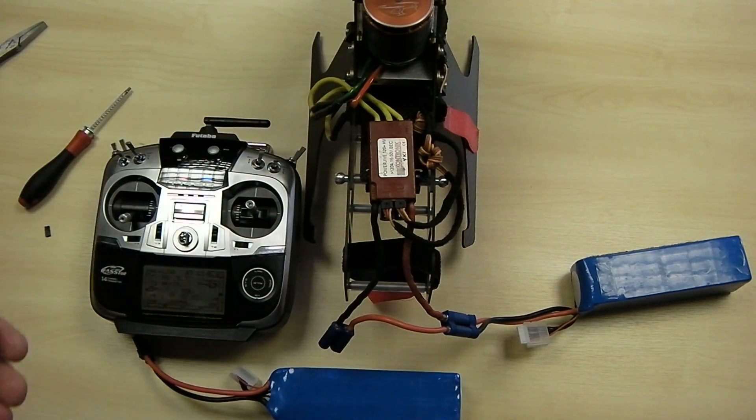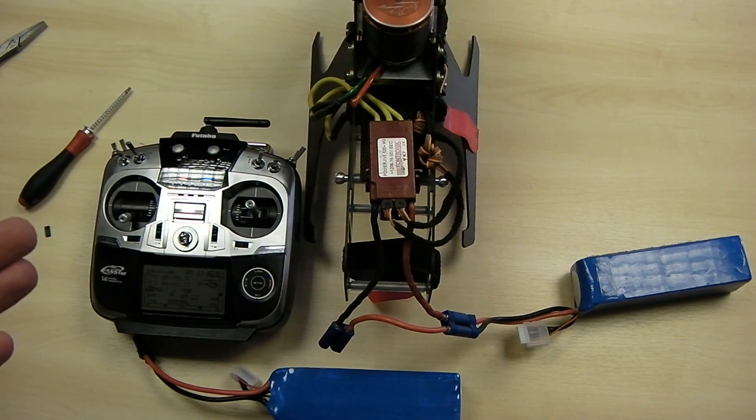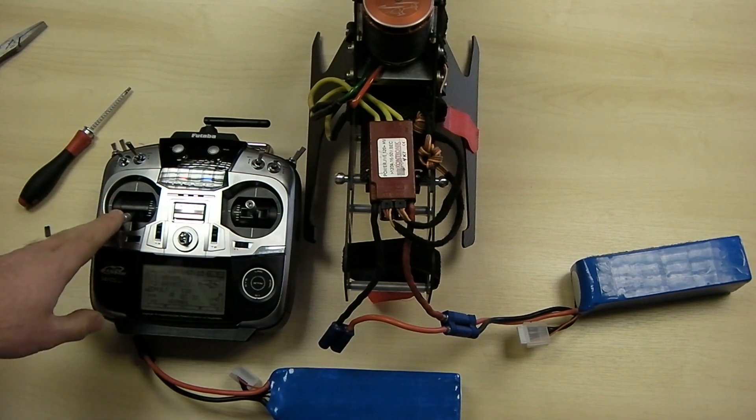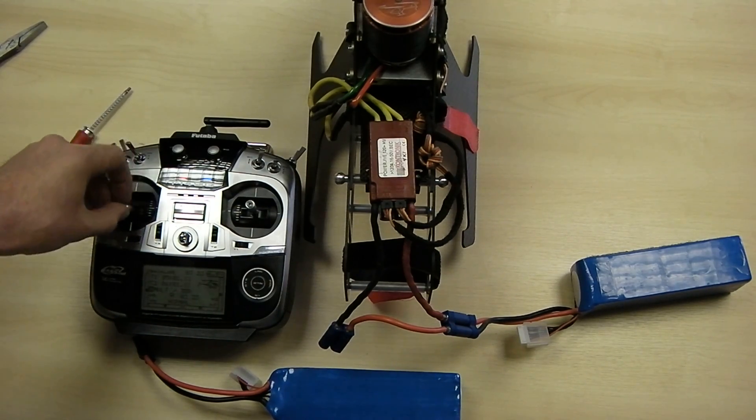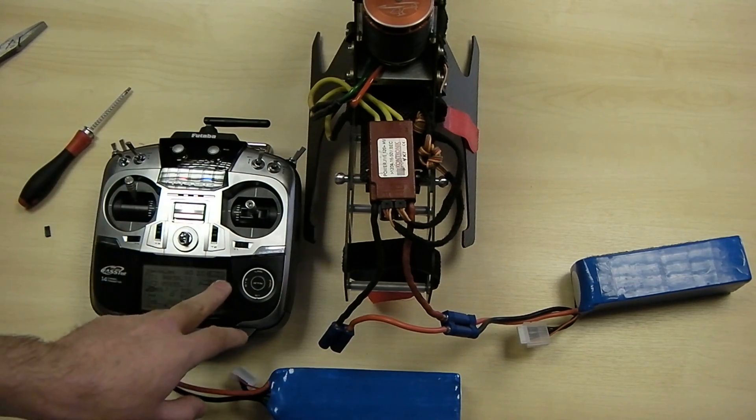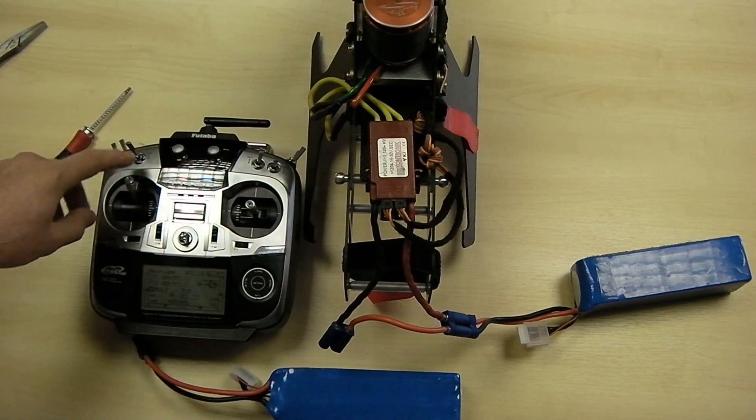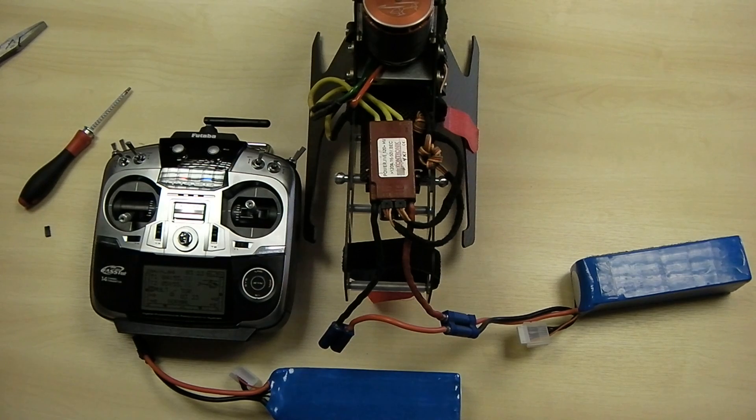That's now set mode one. You always do mode one first. That resets the JIV. Any settings that were in there previously have now been erased, and it also learns your throttle travel. That's why it's important to have it from zero to 100, so it knows that that's 100 and that's zero.